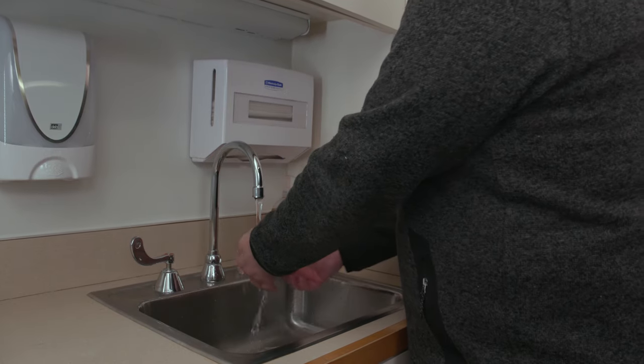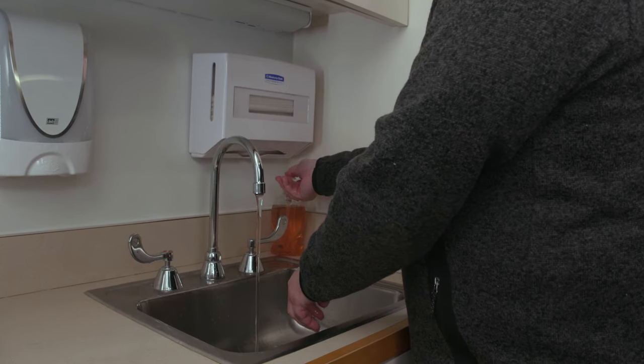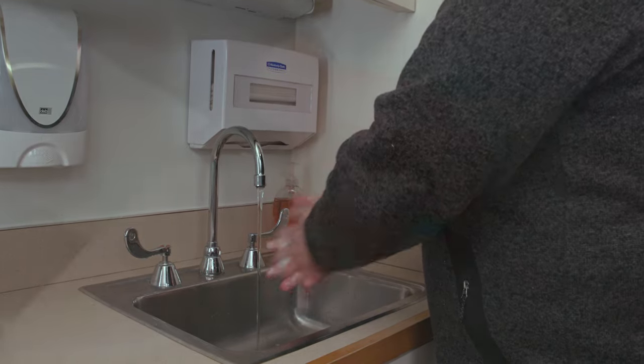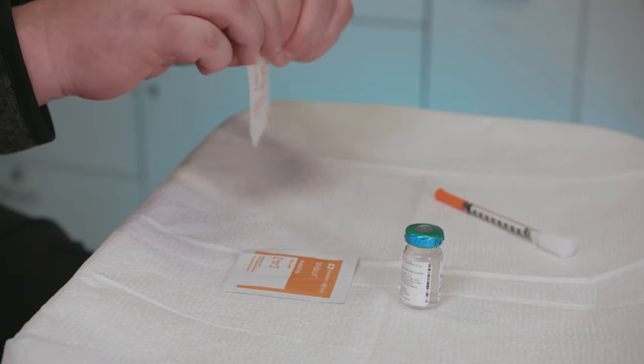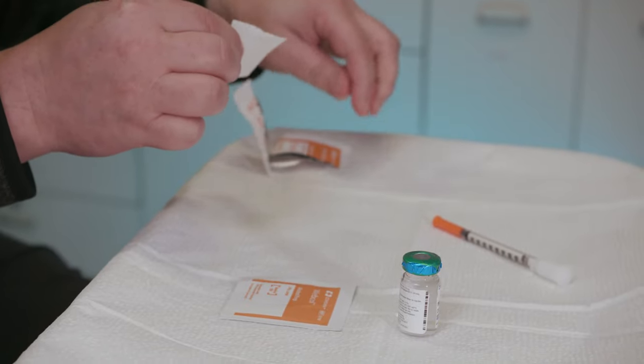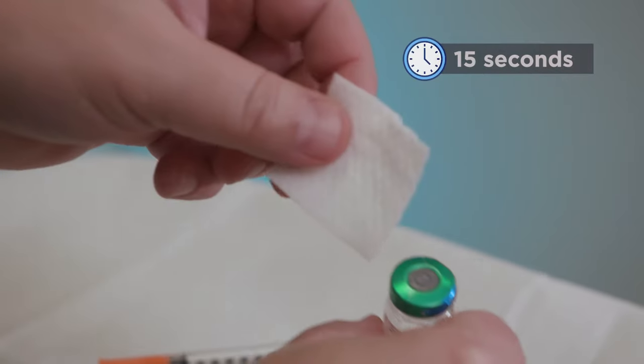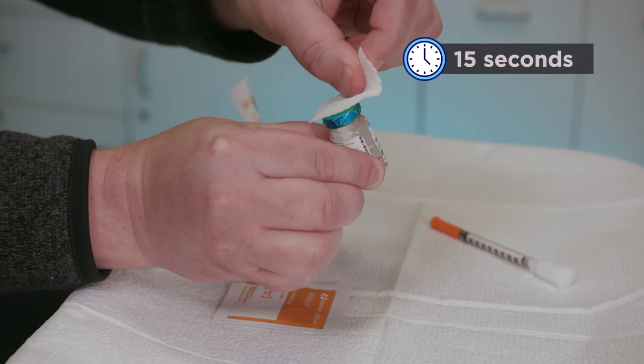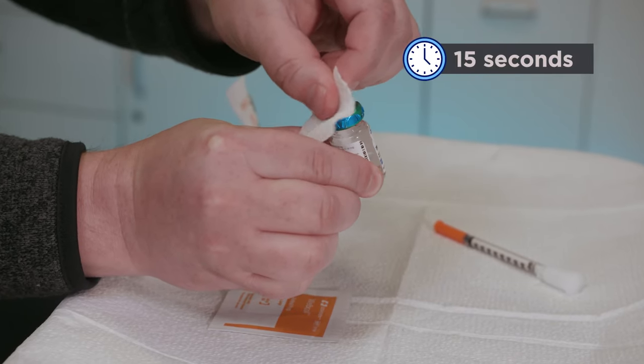Once you have your supplies, wash your hands well with soap and water. Open an alcohol wipe and scrub the rubber stopper on the top of the vial for 15 seconds. This will kill any germs on the stopper.